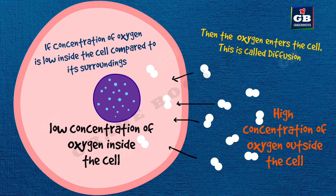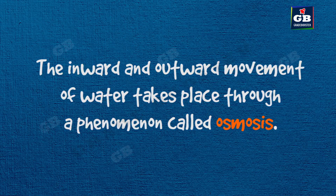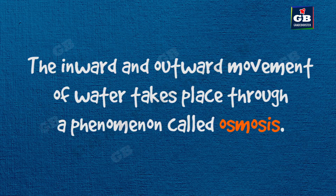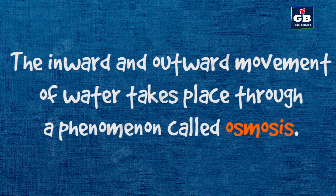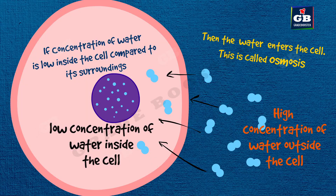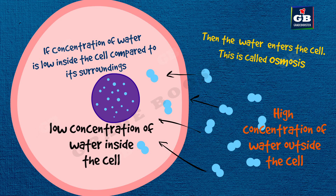There is another phenomenon through which the exchange of water takes place between the cell and its surroundings — osmosis. Osmosis is the movement of water molecules from a place of high concentration to a place of low concentration through a selectively permeable membrane.